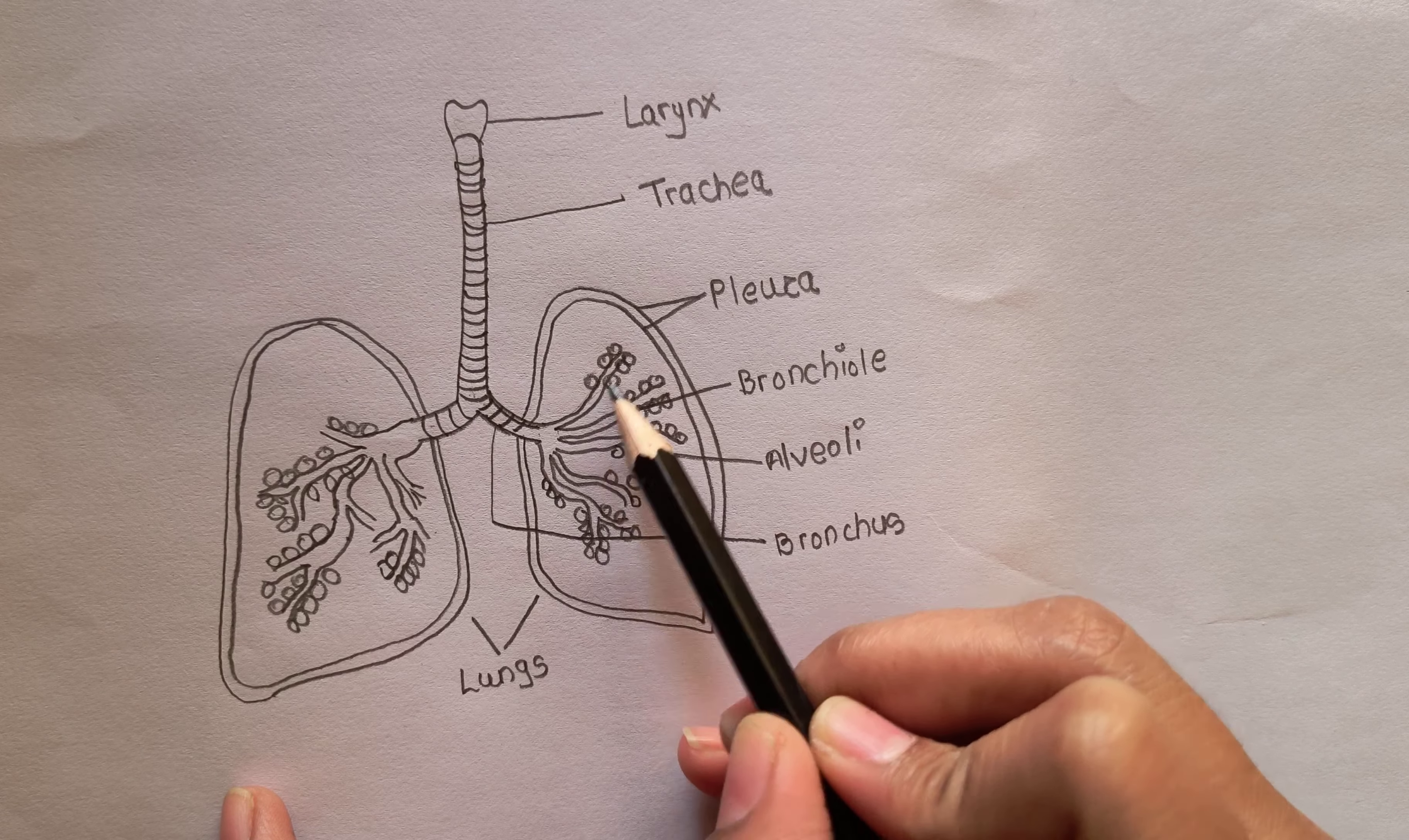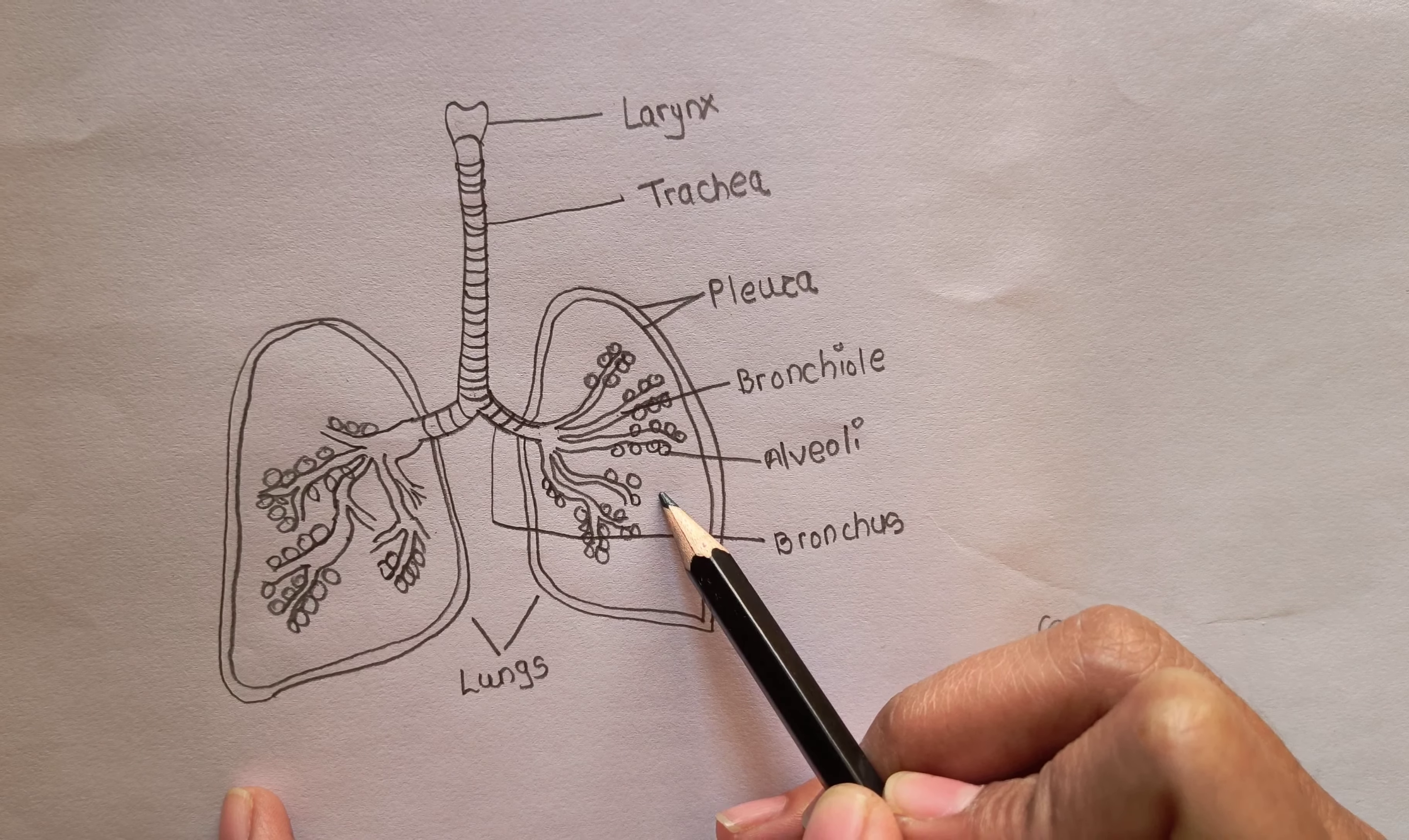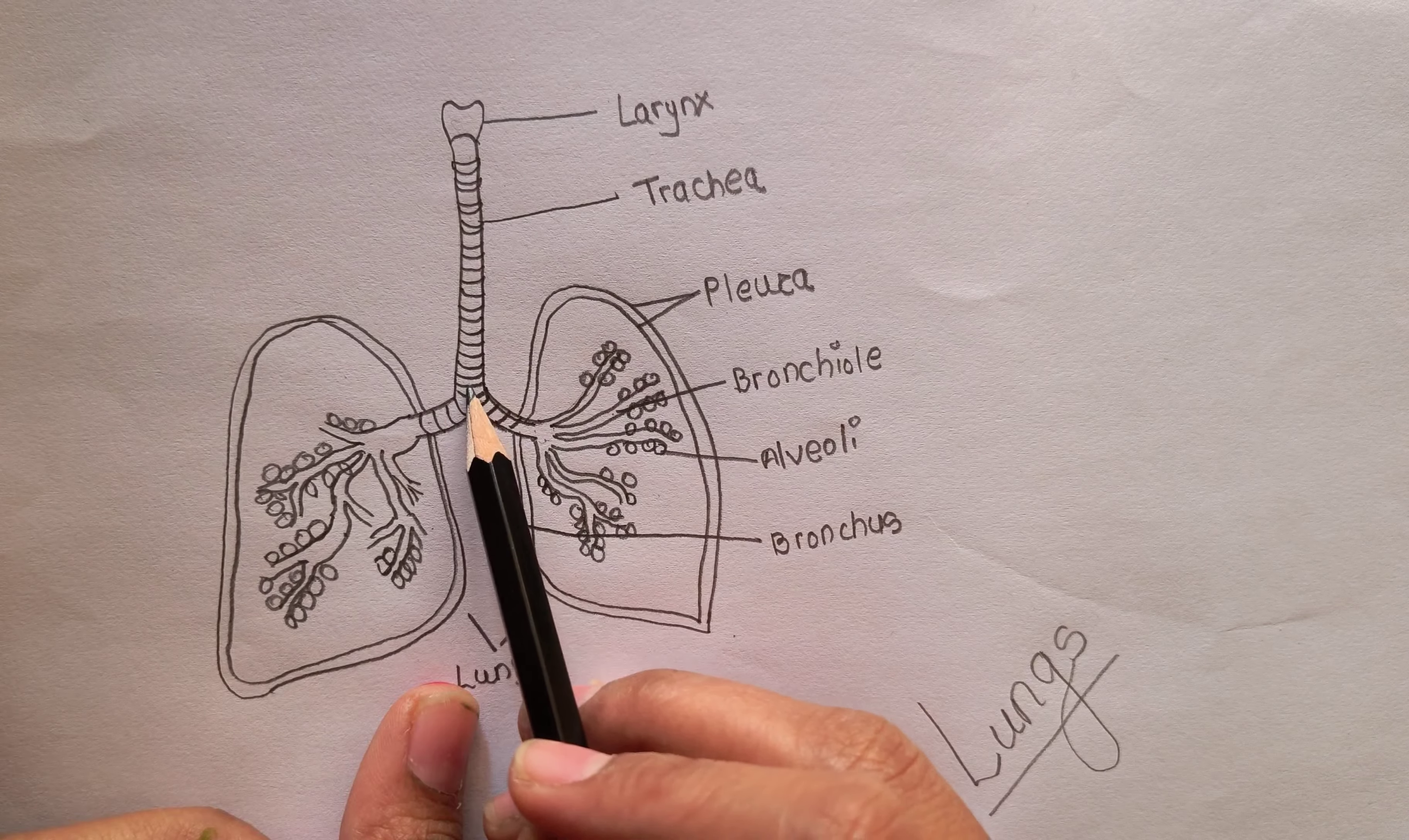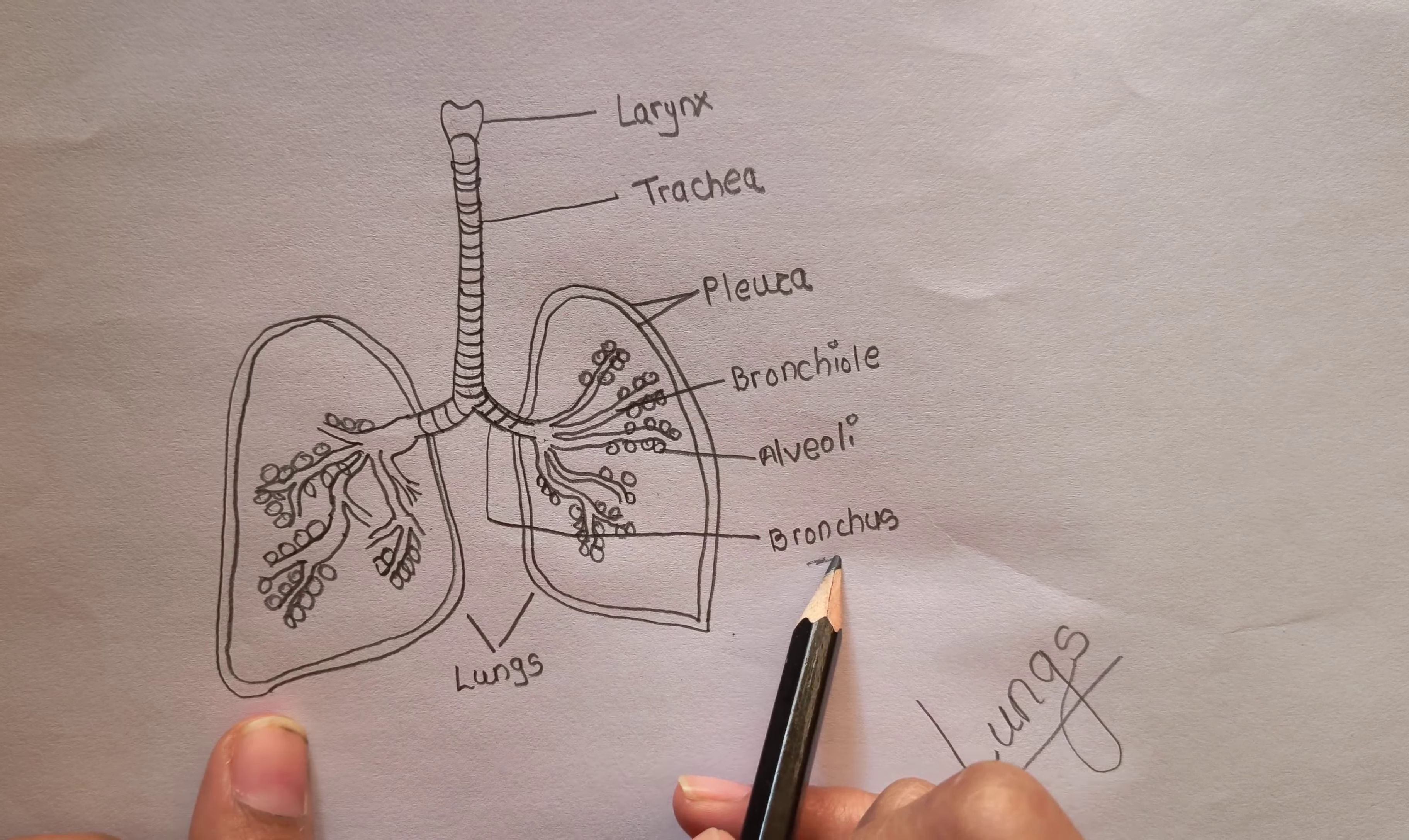Our body, humans, have a pair of lungs. Now, that division of the trachea is called bronchules.